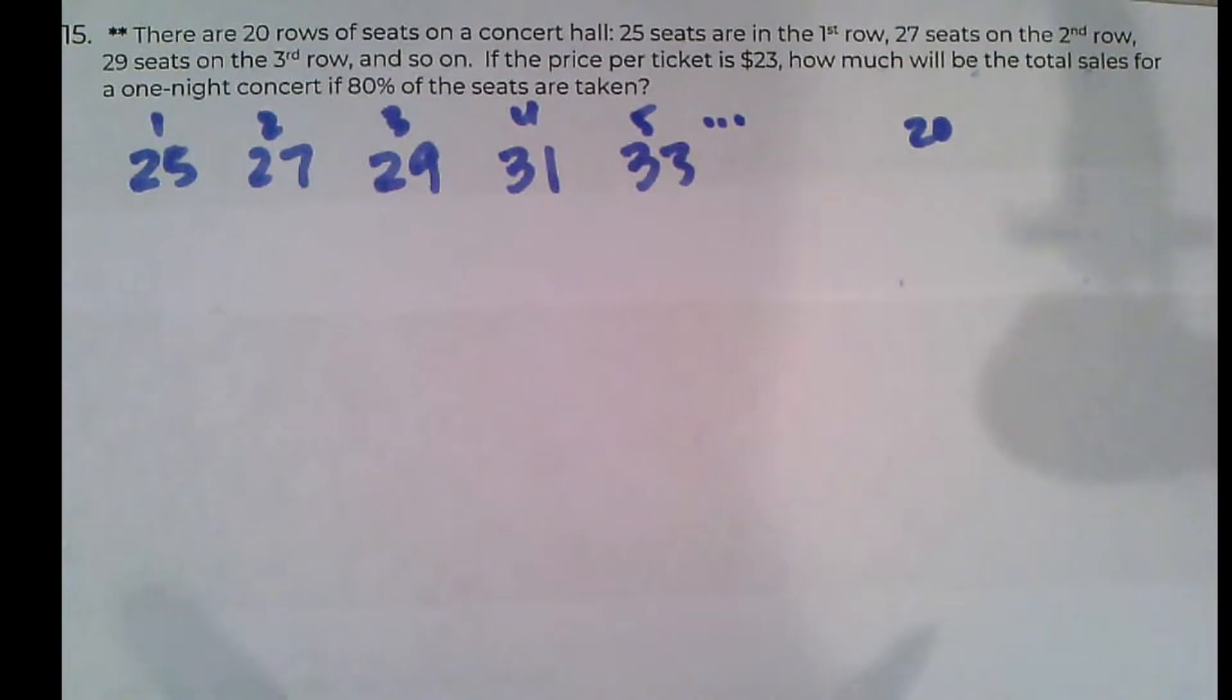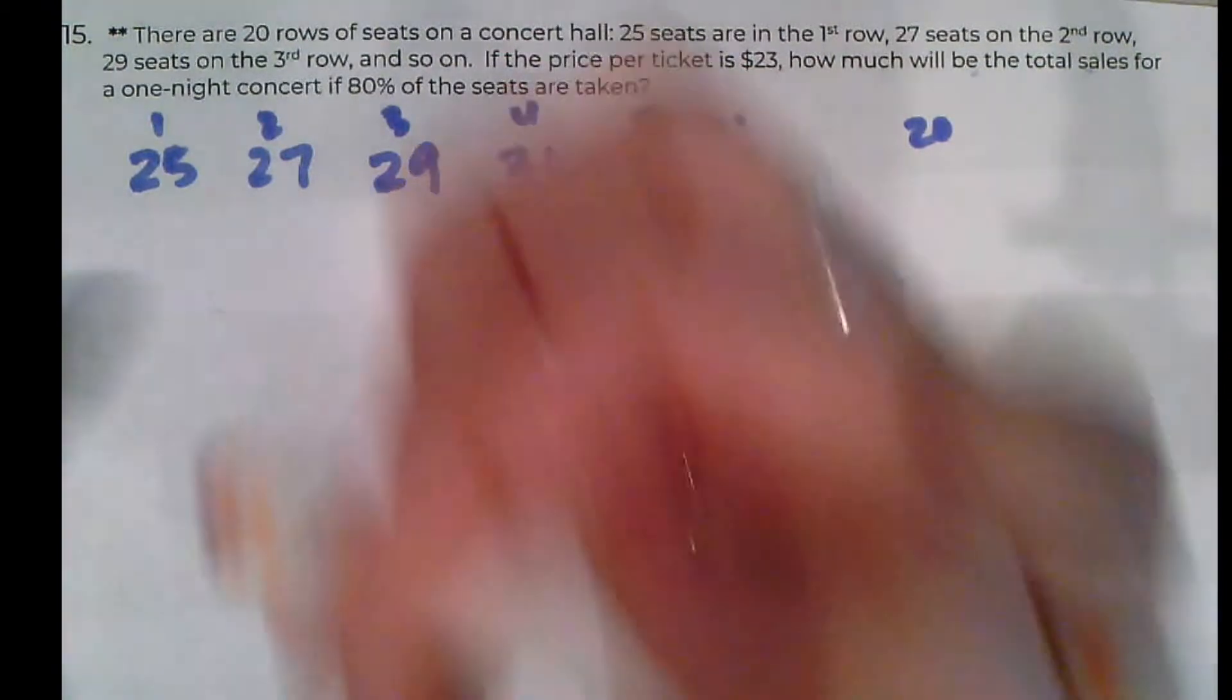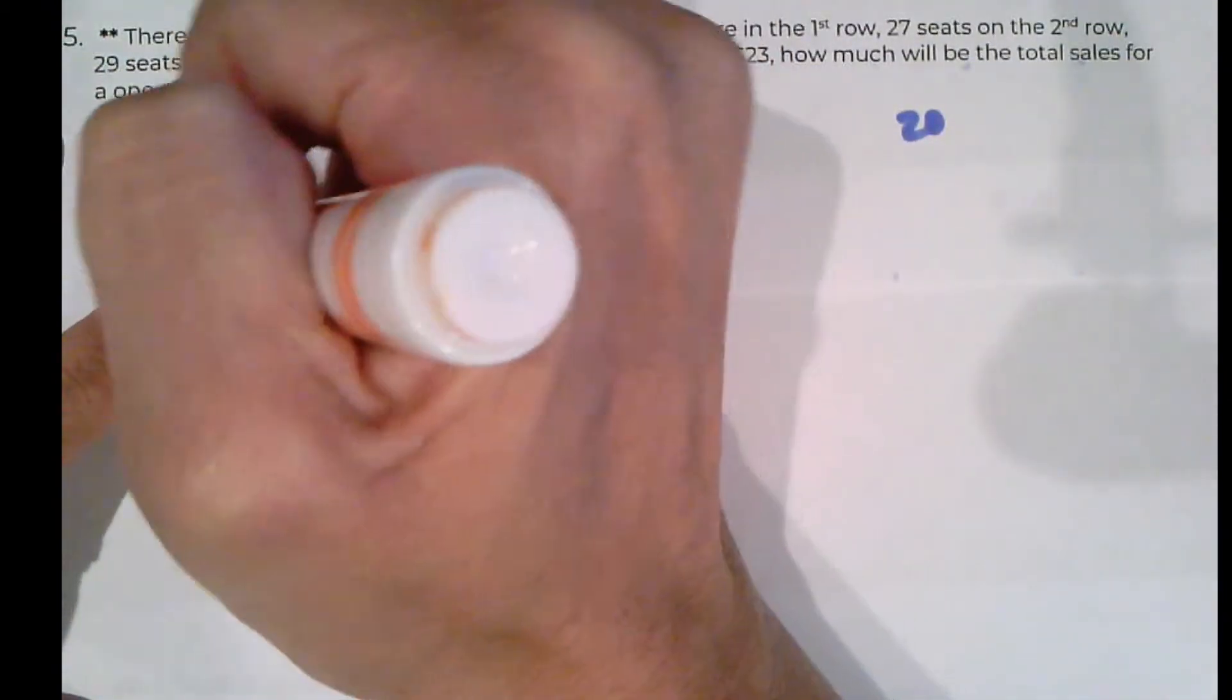Now, it says, if the price per ticket is $23, how much will the total sales be for one night concert if 80% of the seats are taken? So we've got a lot of hints here. We can already see, we figured out the pattern, we're adding two. So this is arithmetic, right?